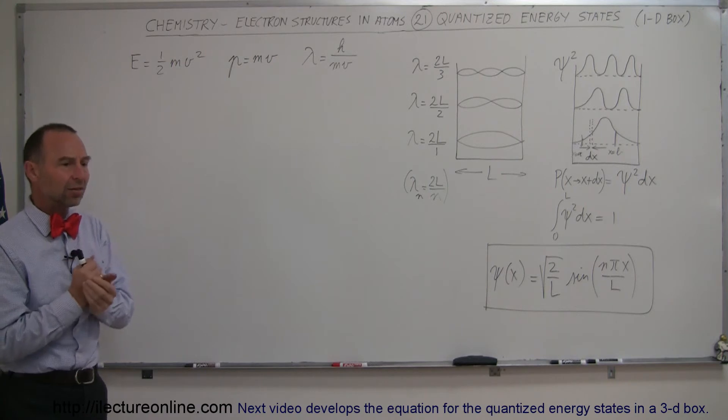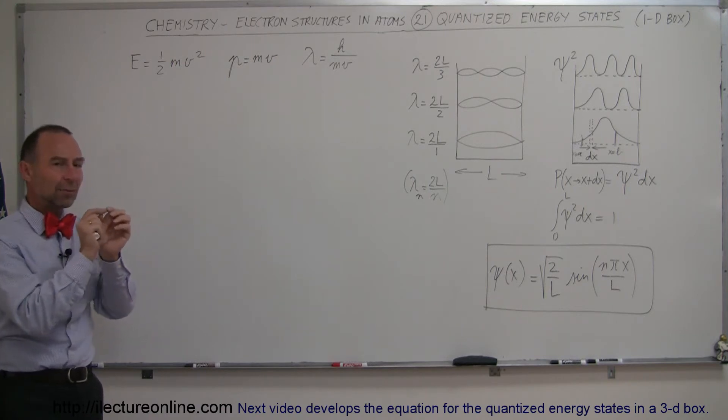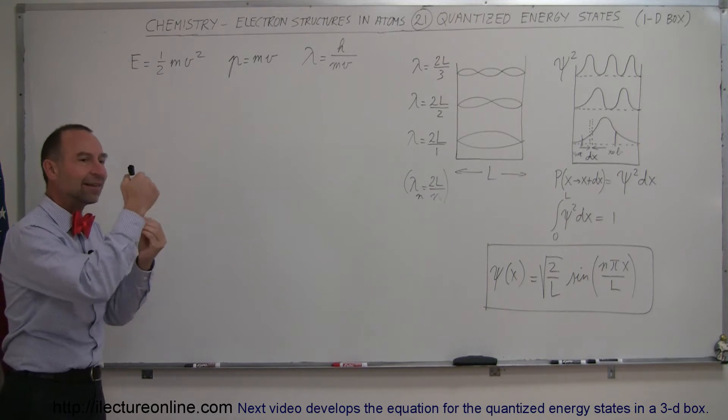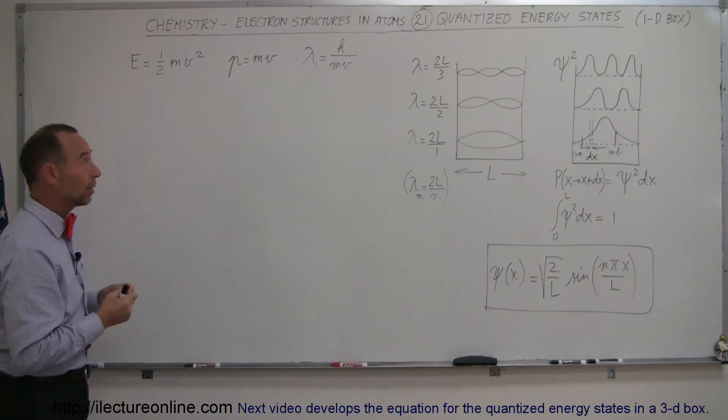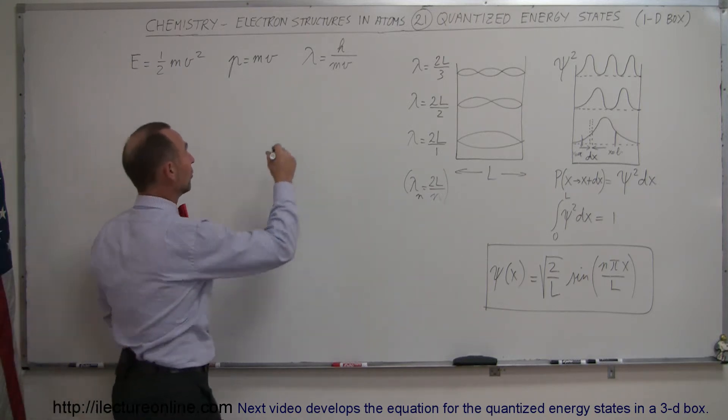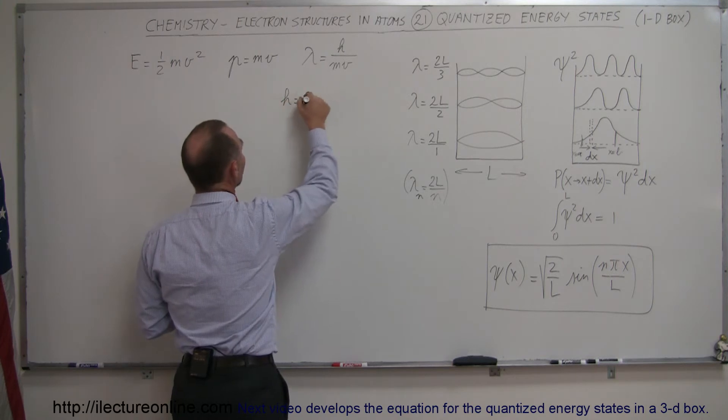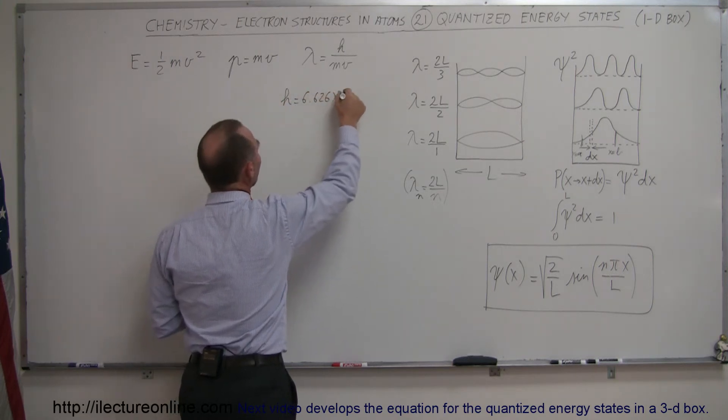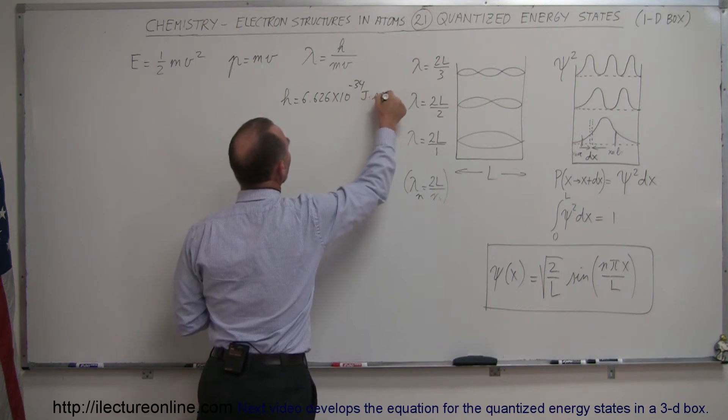H is Planck's constant. It is the number that we figured out that defines the quantum states that things have to be in, like small particles. And H, just for our benefit, is equal to 6.626 times 10 to the minus 34 joules times seconds.